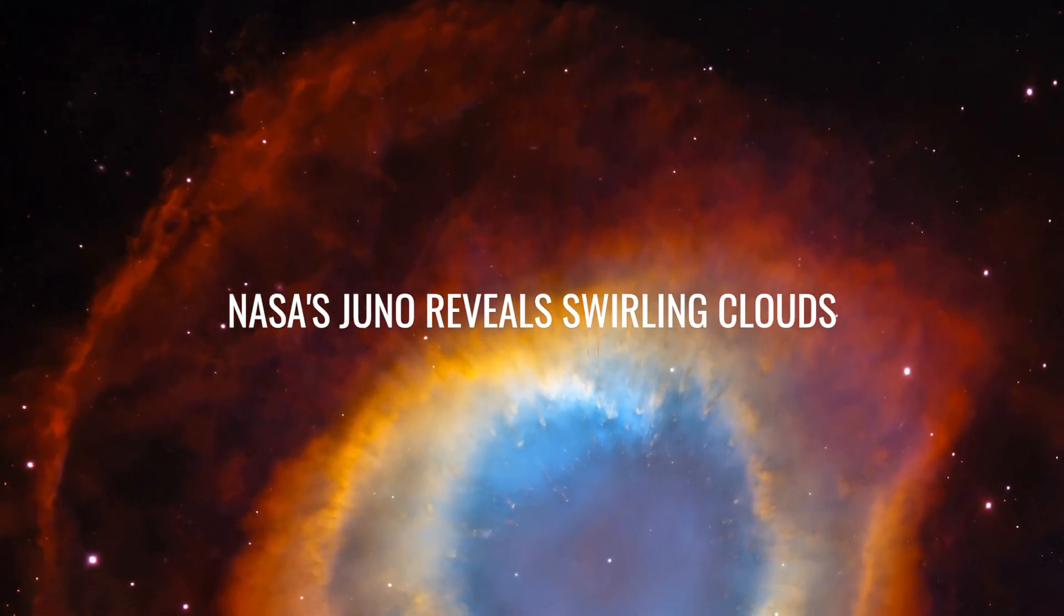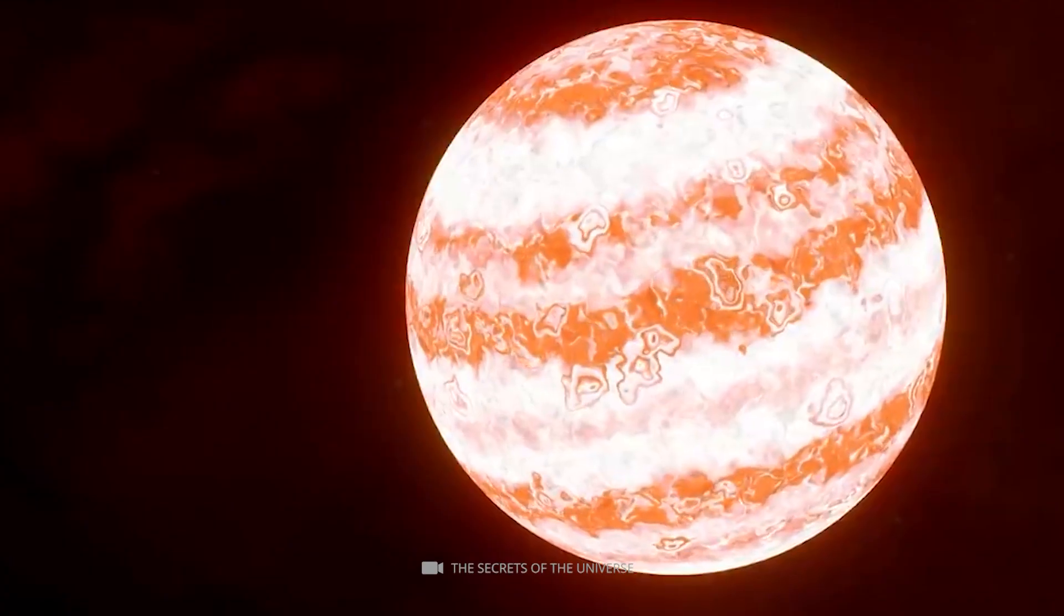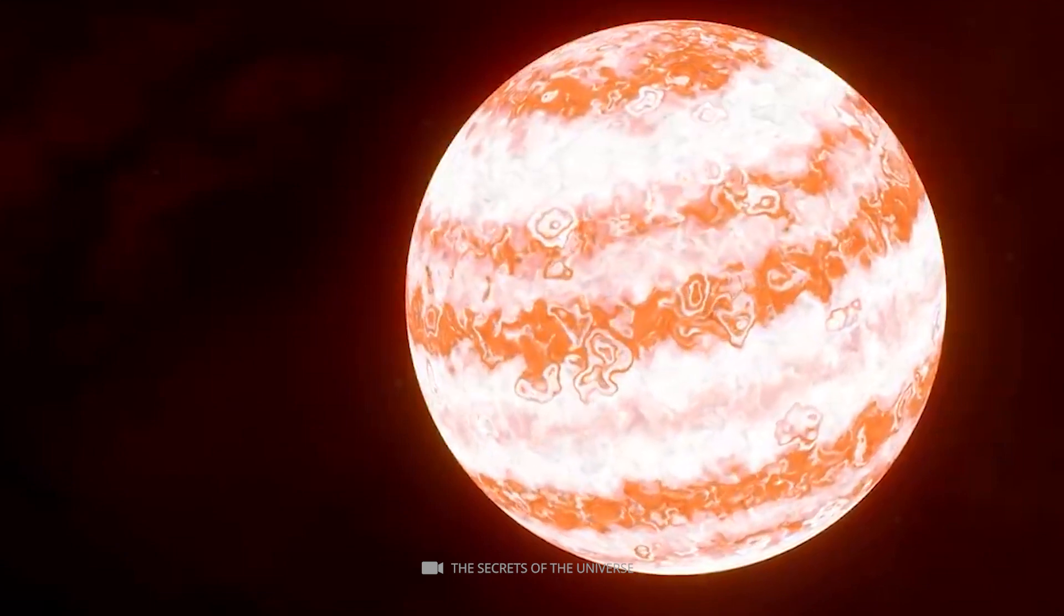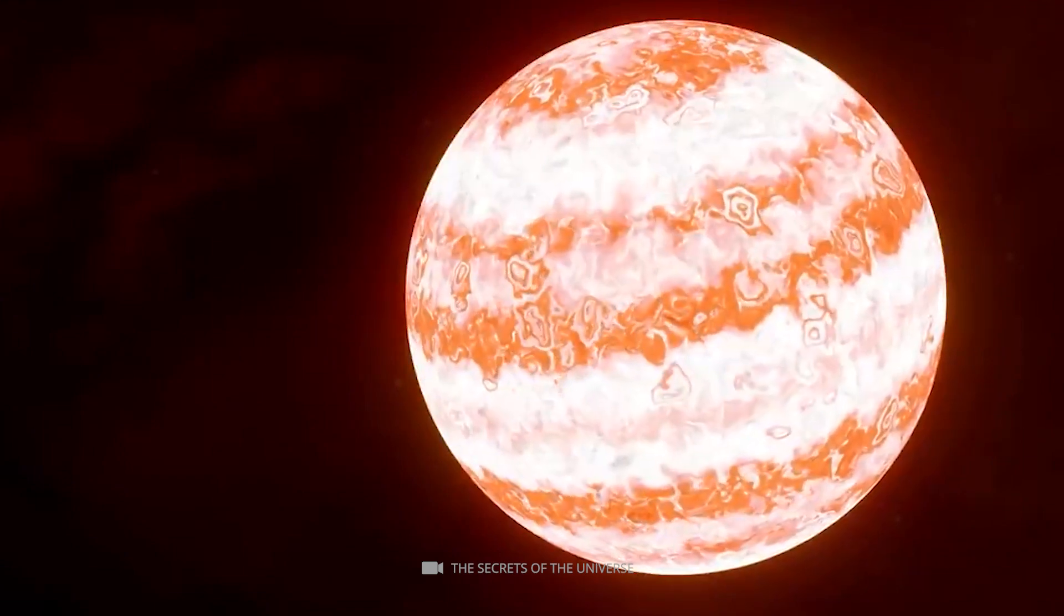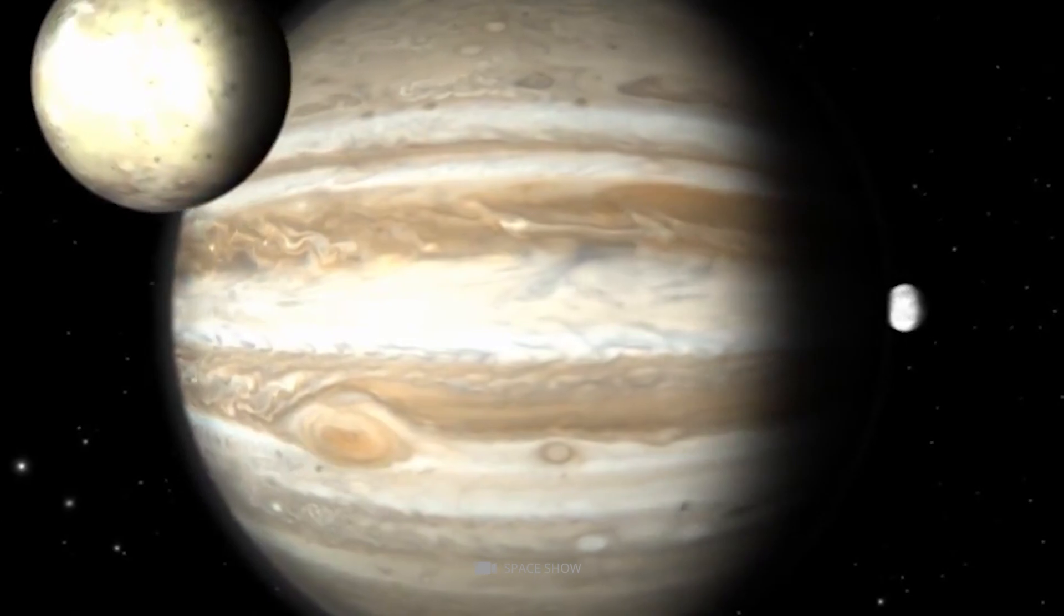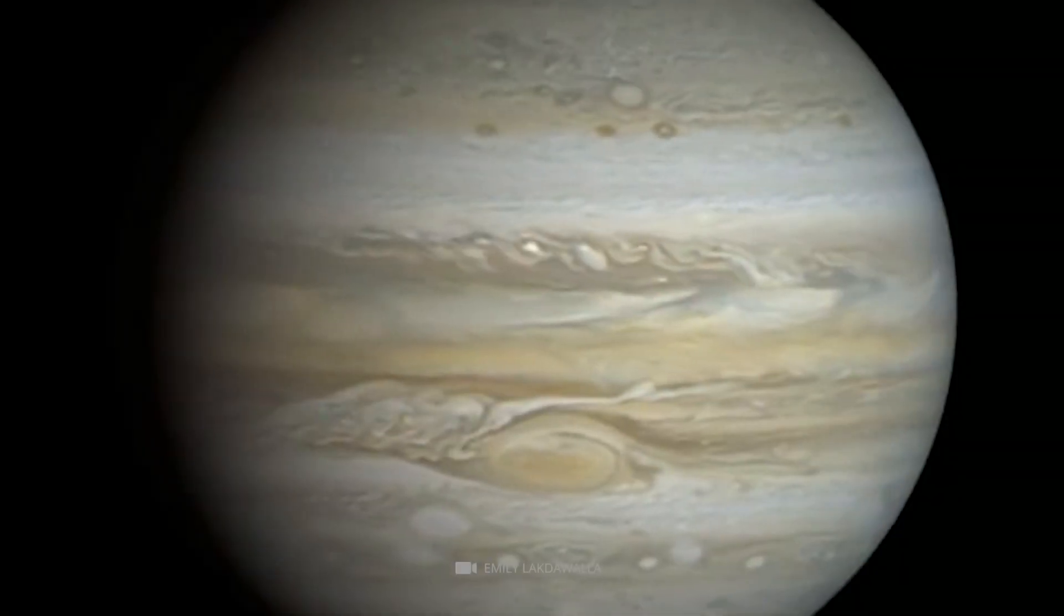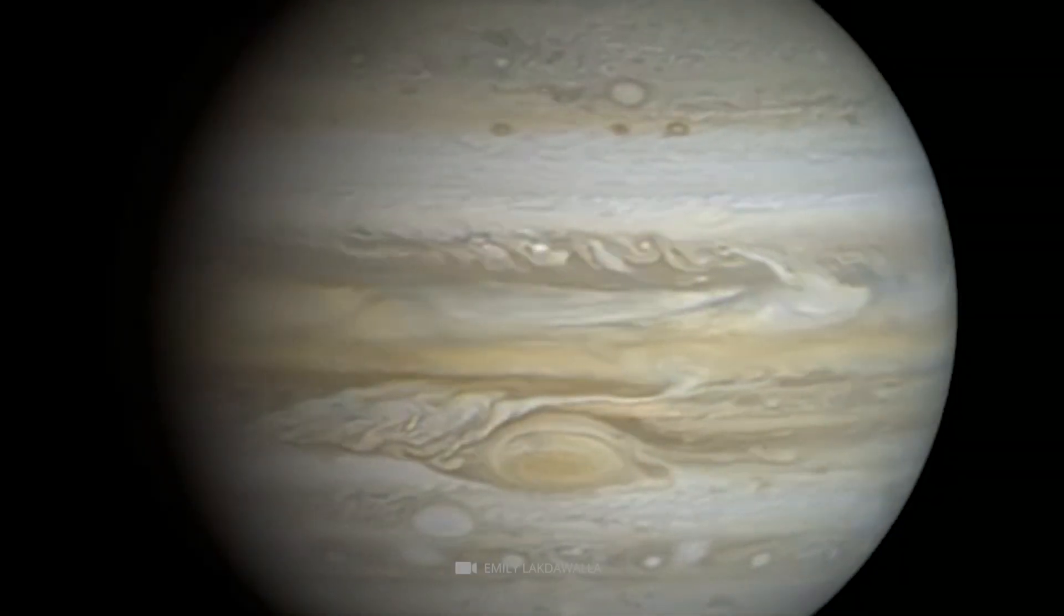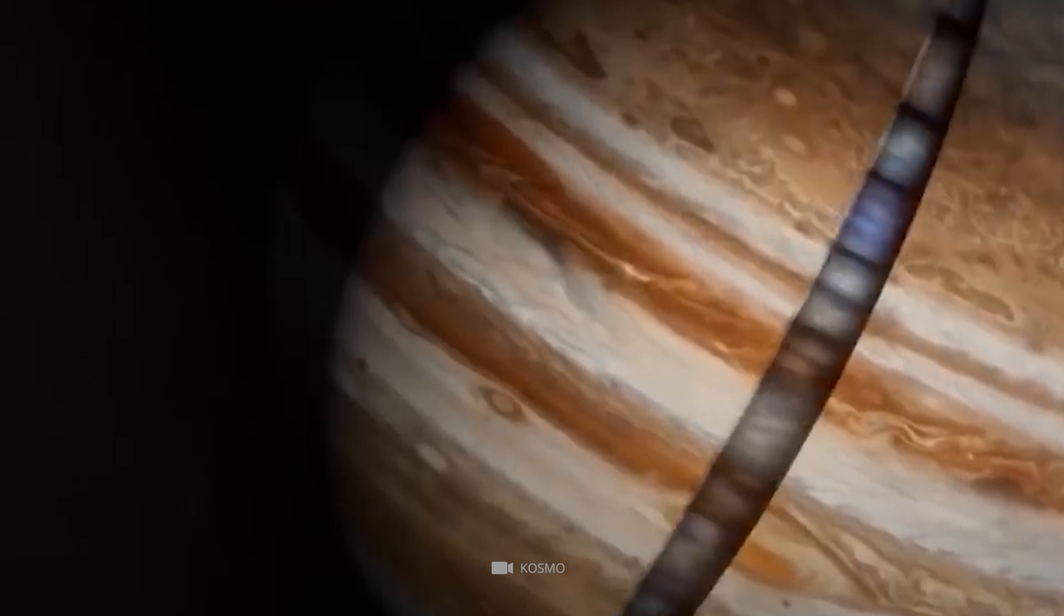NASA's Juno reveals swirling clouds. Clouds on gas giants exhibit a series of distinctive shapes and colors due to the dynamic nature of their atmospheres. On Jupiter, the clouds are mainly comprised of ammonia crystals, water, and sulfur compounds.